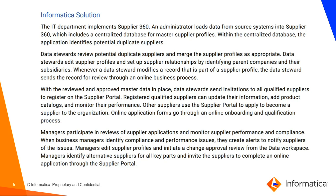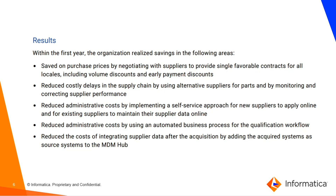After implementing Supplier 360, the organization achieved these key results. First, they saved on purchase prices by negotiating with suppliers to provide a single favorable contract for all locations, including volume discounts and early payment discounts — because previously, different geographical locations had different contracts and terms. Second, they reduced cost delays in the supply chain by using alternative suppliers for parts and by monitoring and correcting supplier performance. With a complete view of the data, bottlenecks in the supply chain could be quickly addressed with a backup supplier.